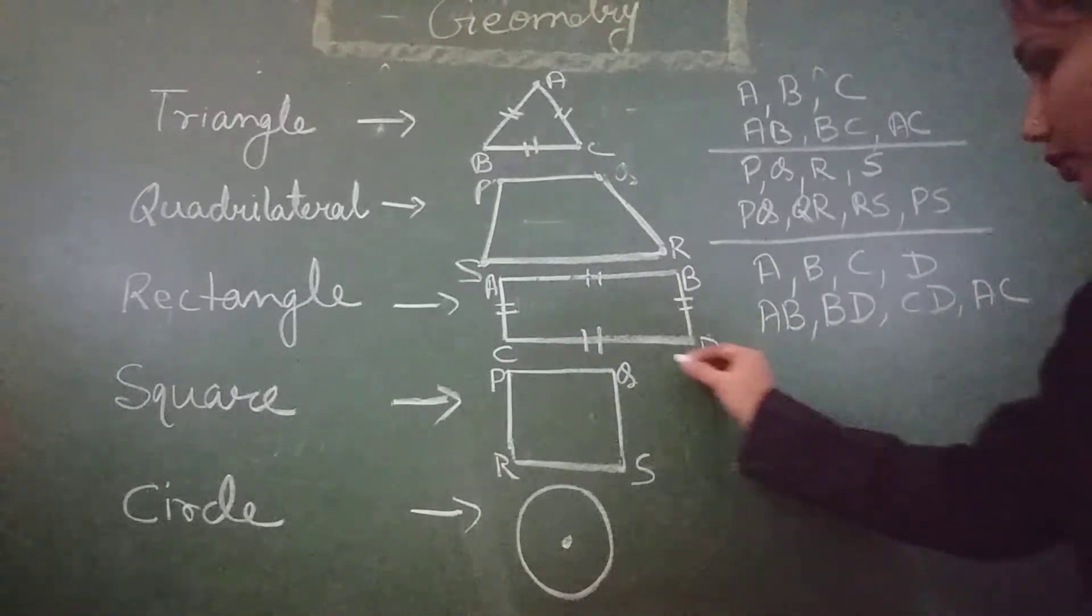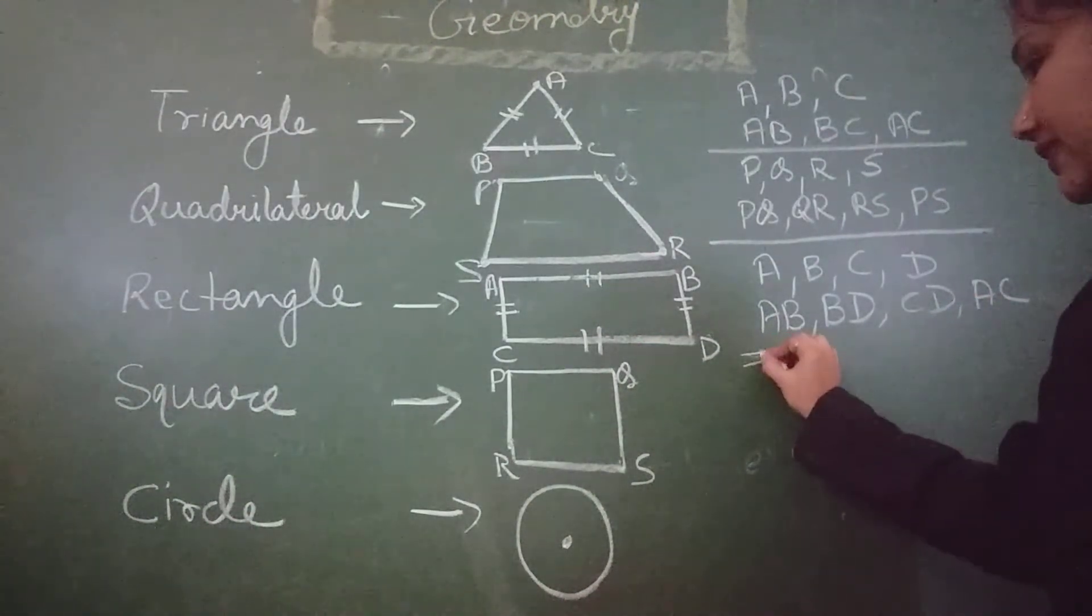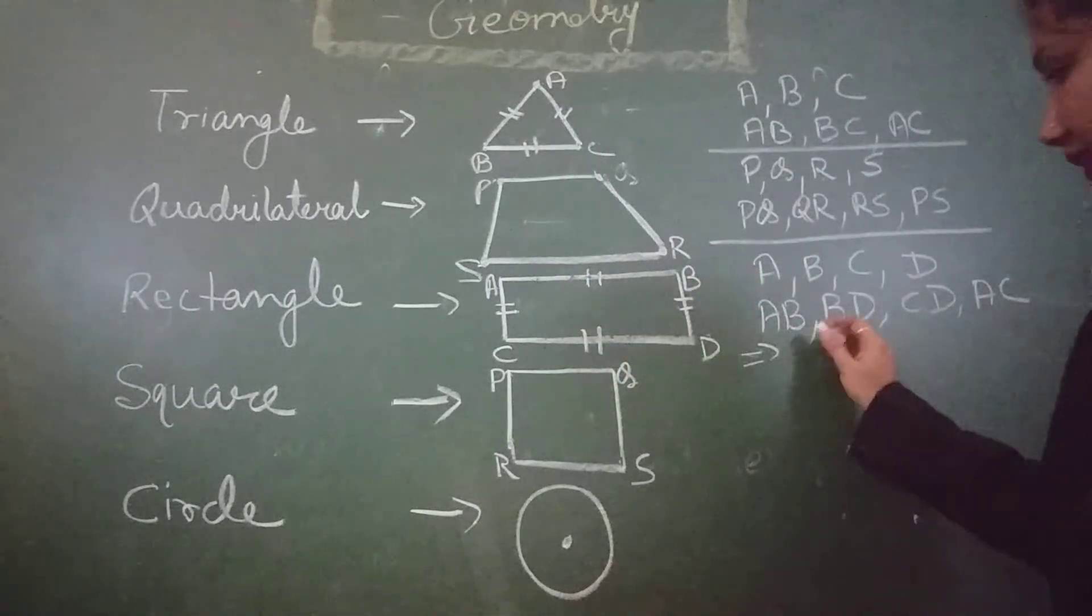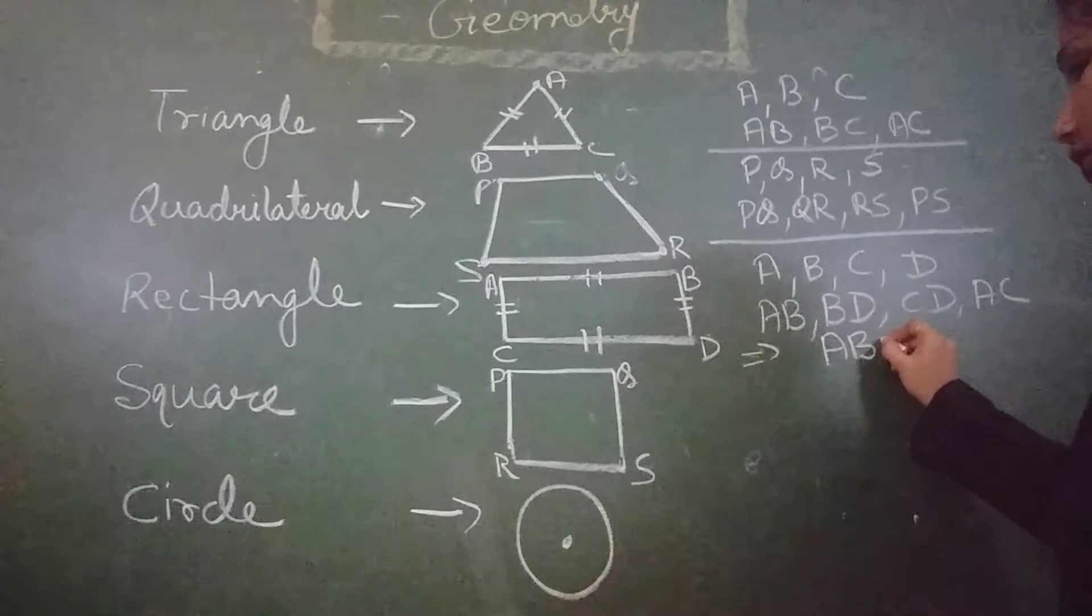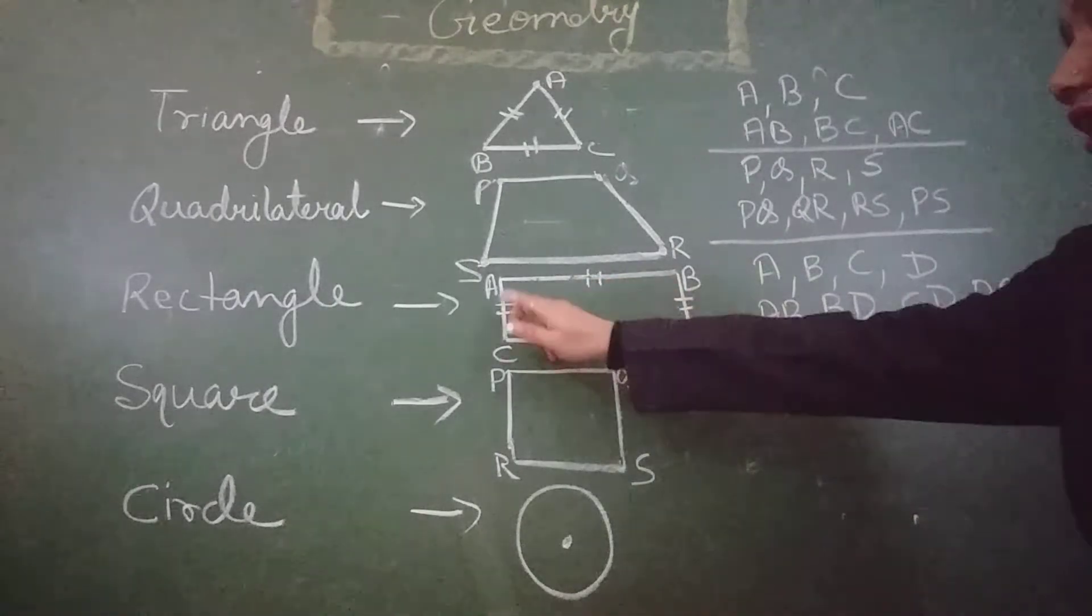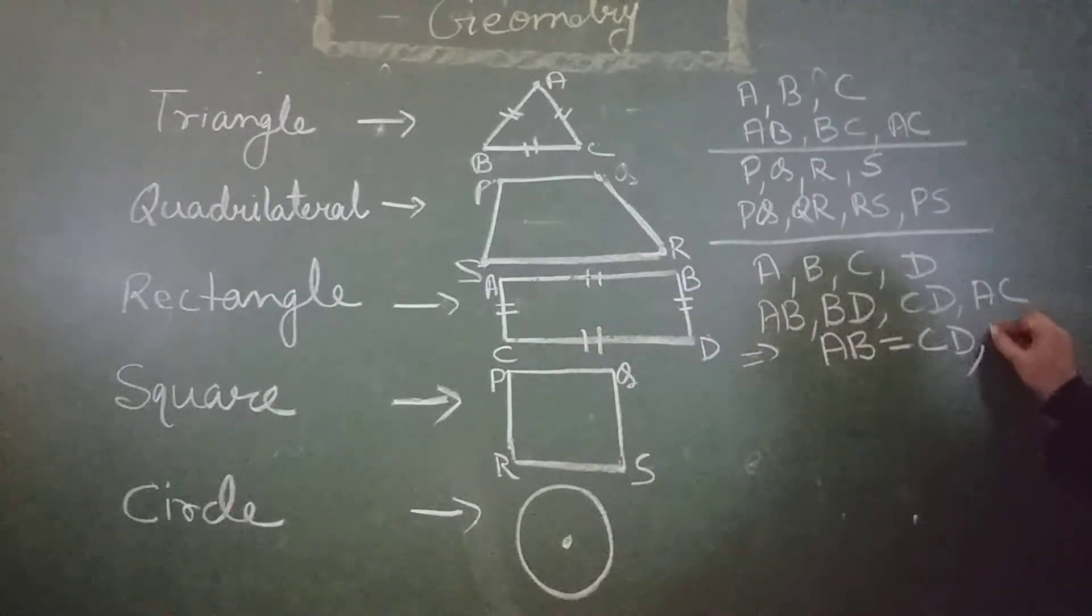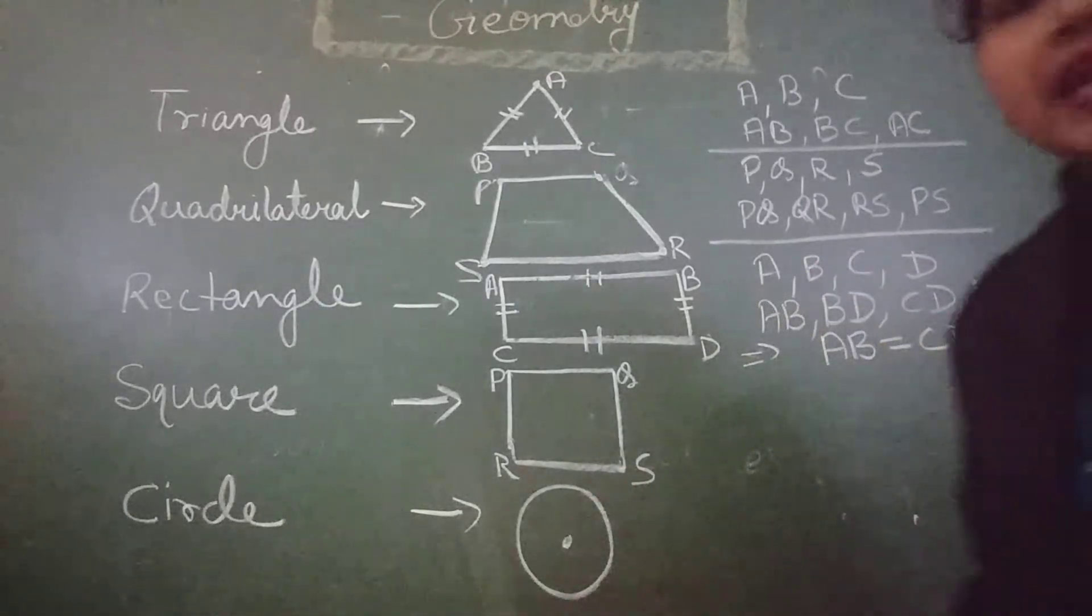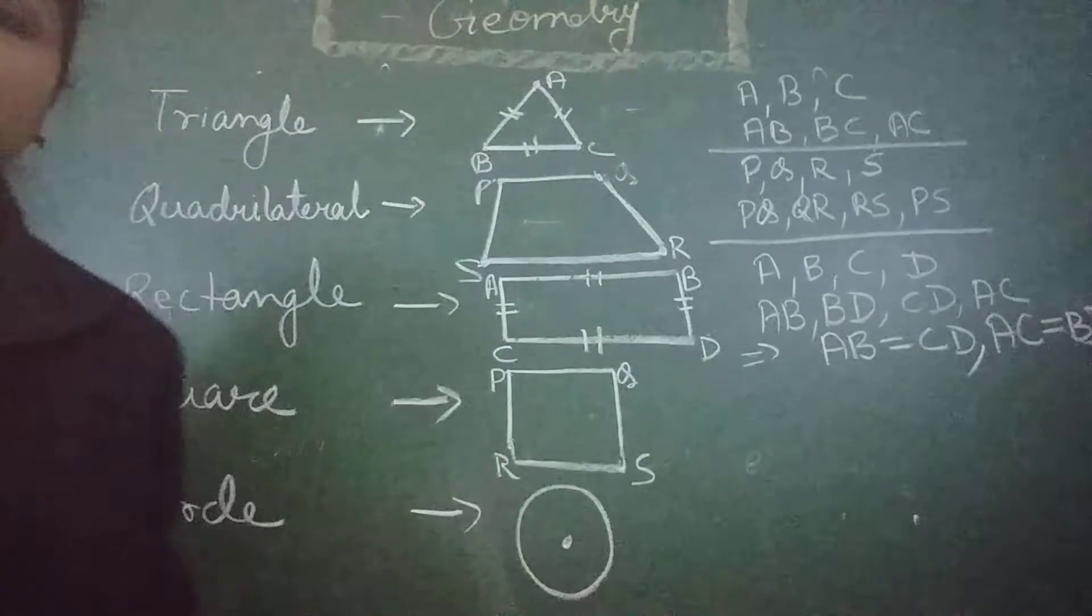And what have I told you? That in case of rectangle, AB is equal to CD and AC is equal to BD.